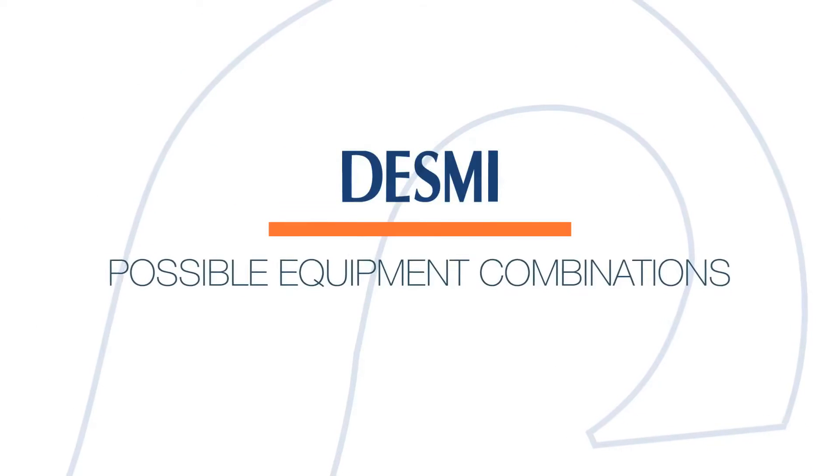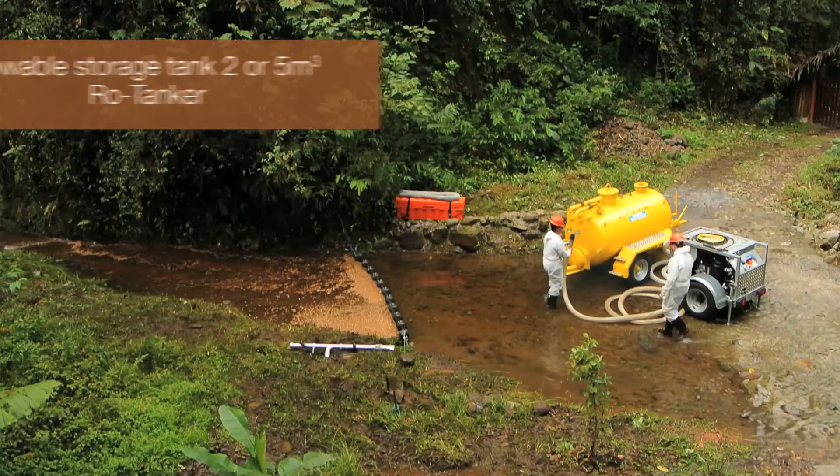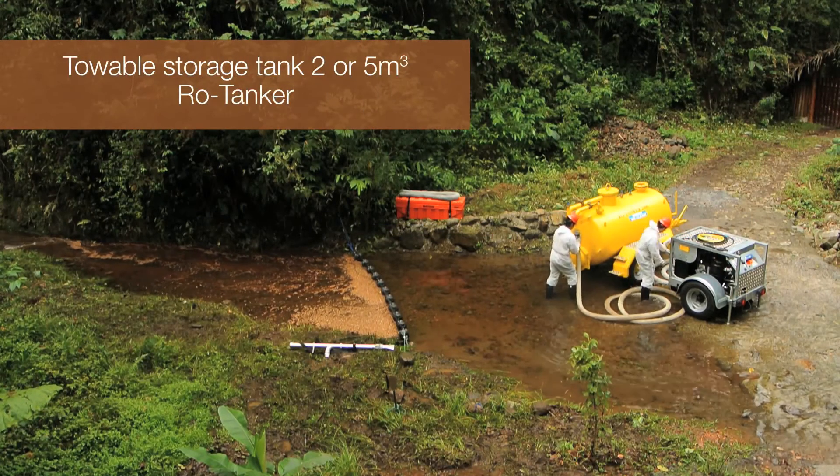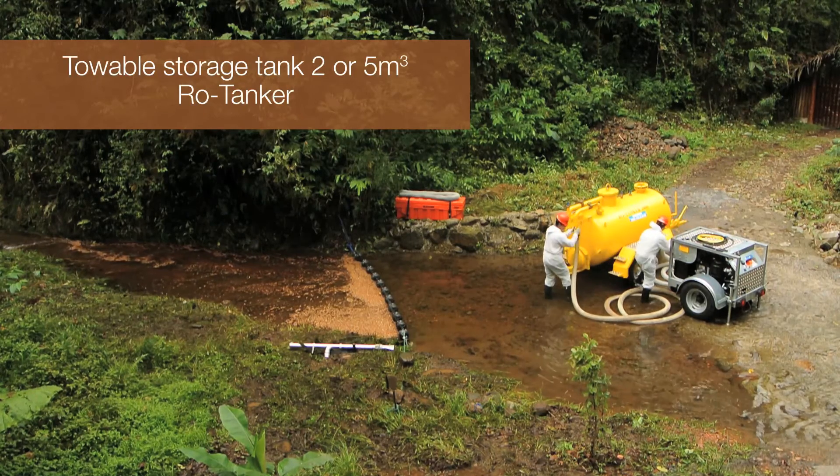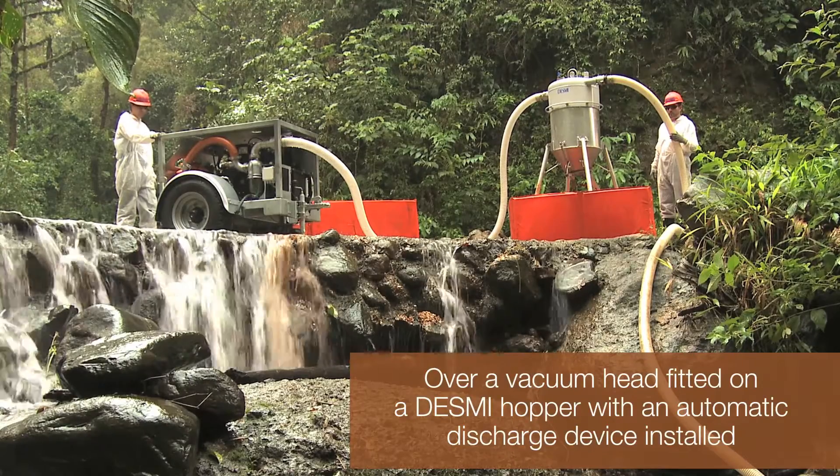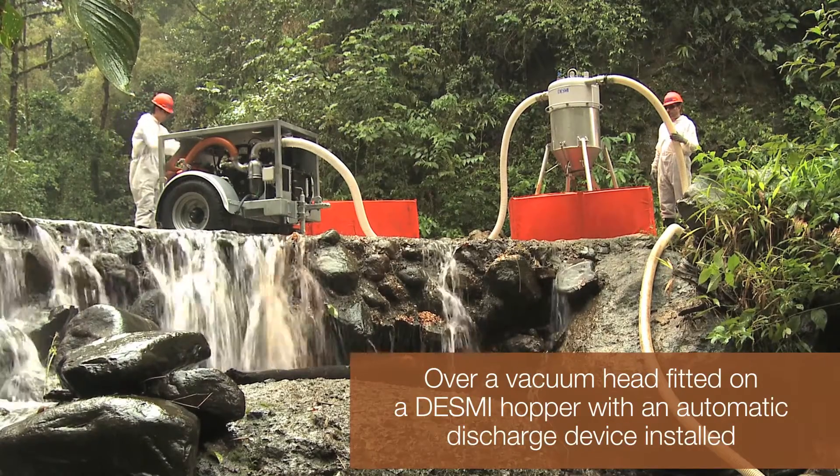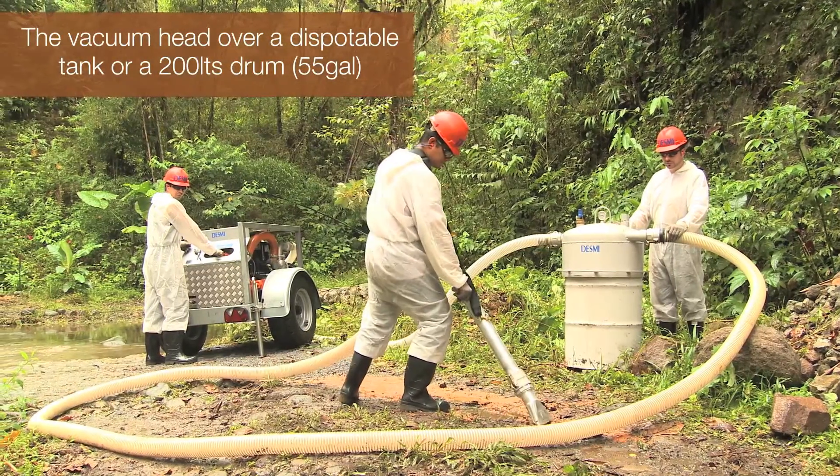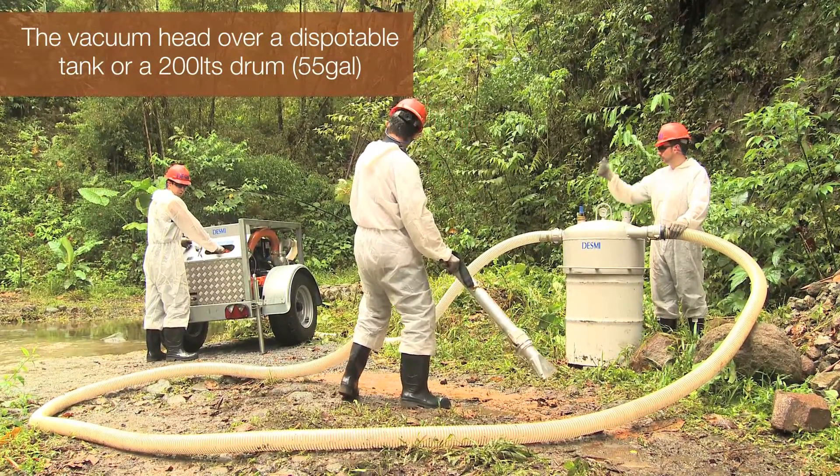The equipment can be used in a variety of modes according to the status of the spill: connected to the towable 2 or 5 cubic meter vacuum tank called the Ro tanker, connected to the vacuum head placed over a hopper with automatic discharge, or connected to the vacuum head placed over a 200 liter or 55 gallon metallic drum.